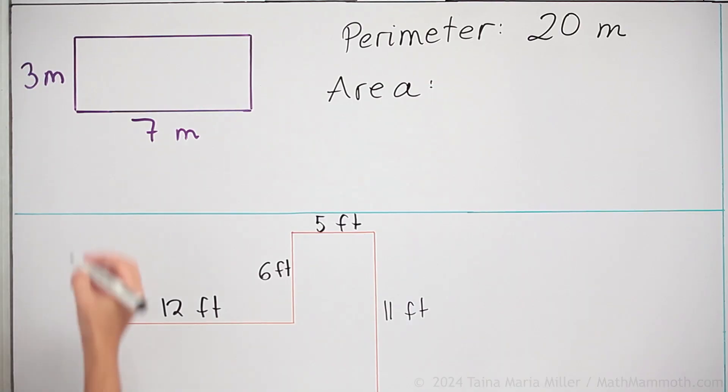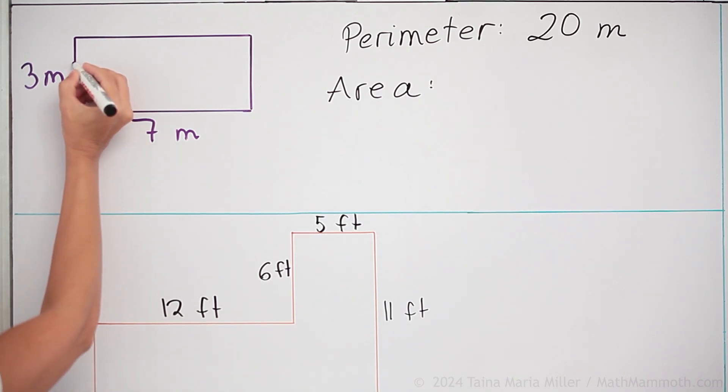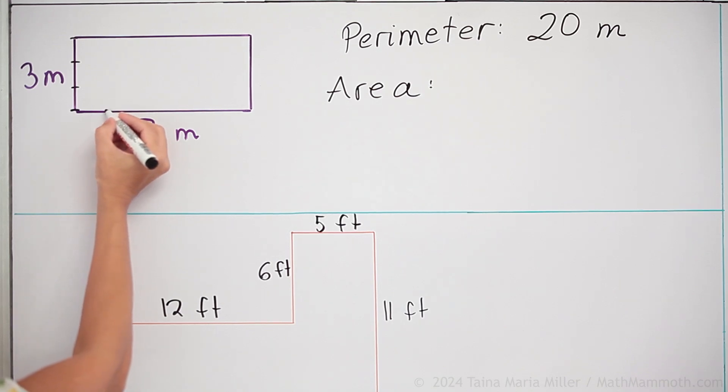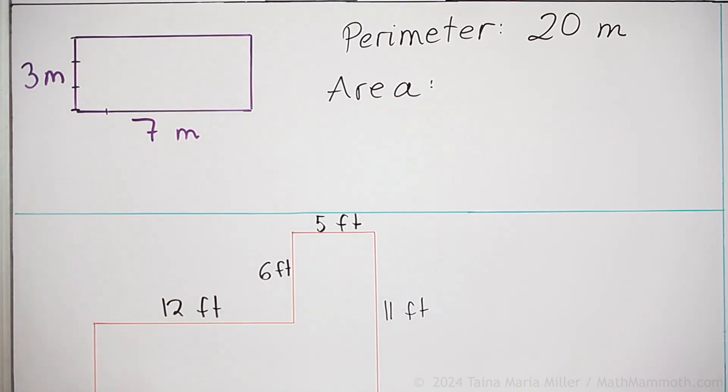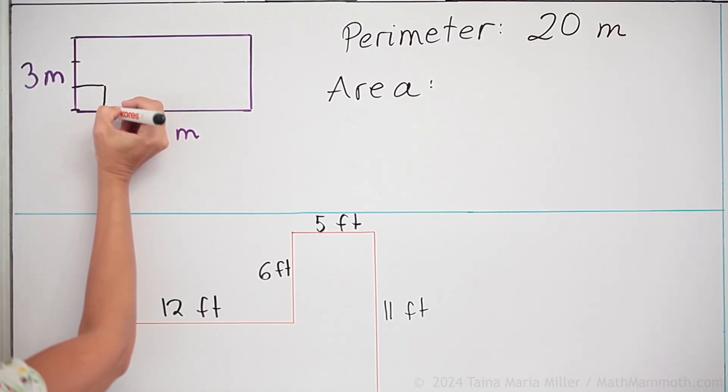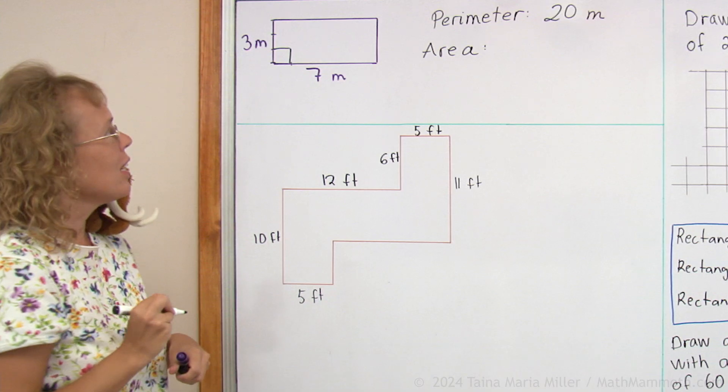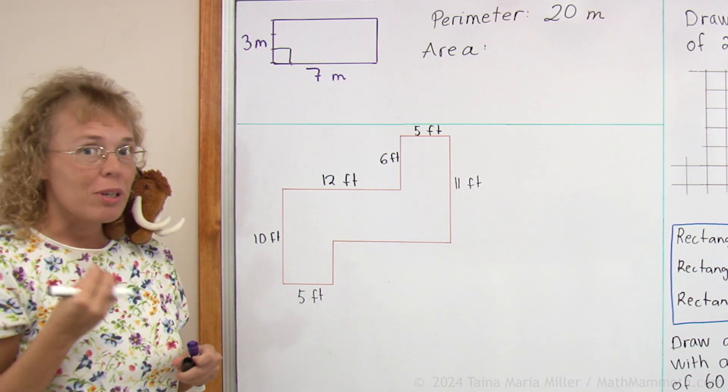And then the area. If I were to divide this into 3 parts, 3 meters, and this one into 7 parts, then I could draw here a grid and get all those squares. And that would be the area. Each square here would be 1 square meter. Area is measured in squares.